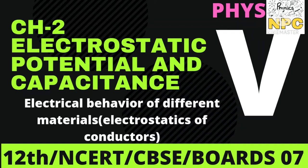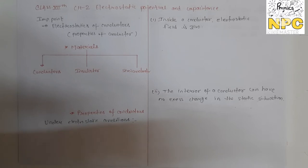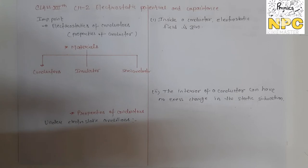Hello everyone, this is Tripti. Welcome to NPC, the channel where you can learn all the concepts of physics. Today we will learn a new concept from the chapter 'Electrostatic Potential and Capacitance' — all about the electrostatics of conductors, or the properties of conductors. When a conductor is placed in an electric field, what will be its behavior? This will be covered in different points in this video.